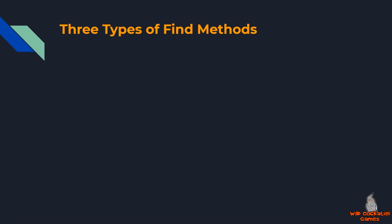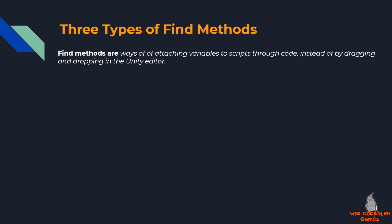Welcome everyone to Wild Cockatiel Games, Unity Game Programming for Beginners. In this video we're going to be taking a look at the three different types of find methods that you can use in your game development. These find methods are ways of attaching variables to scripts through code instead of by dragging and dropping them in the Unity Editor.